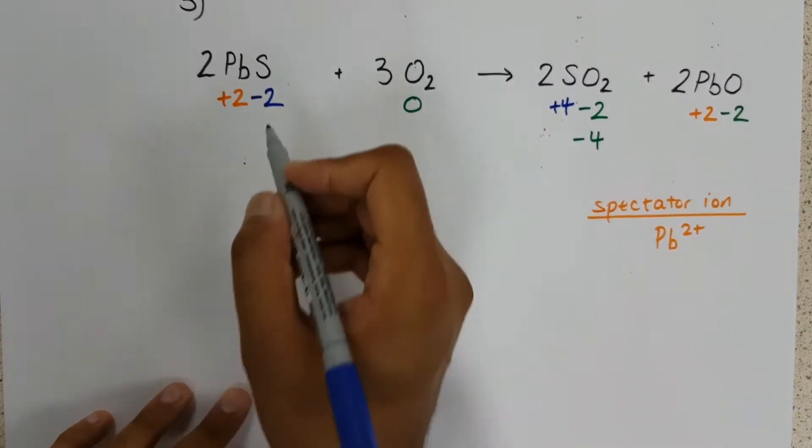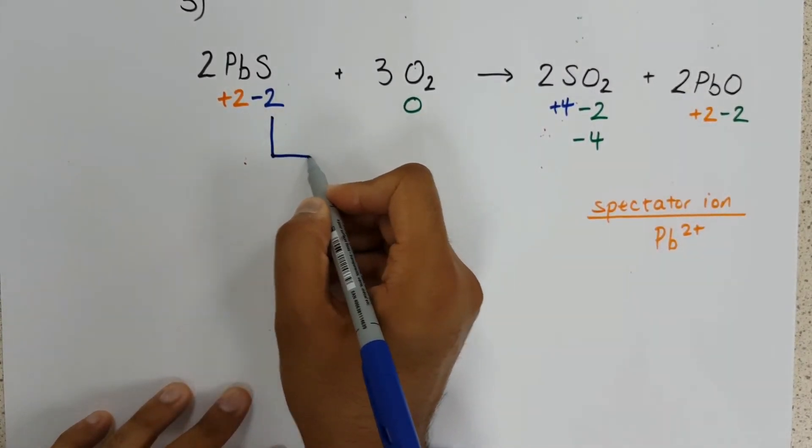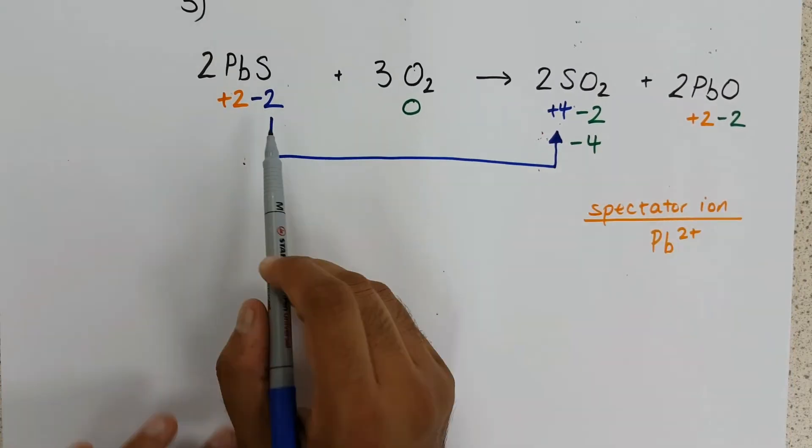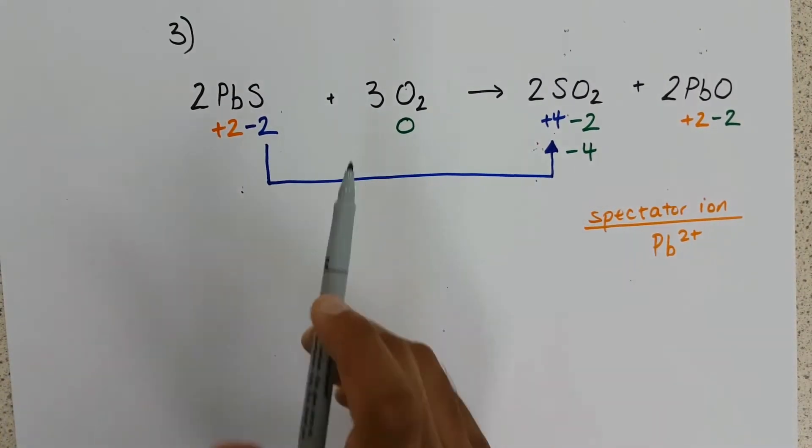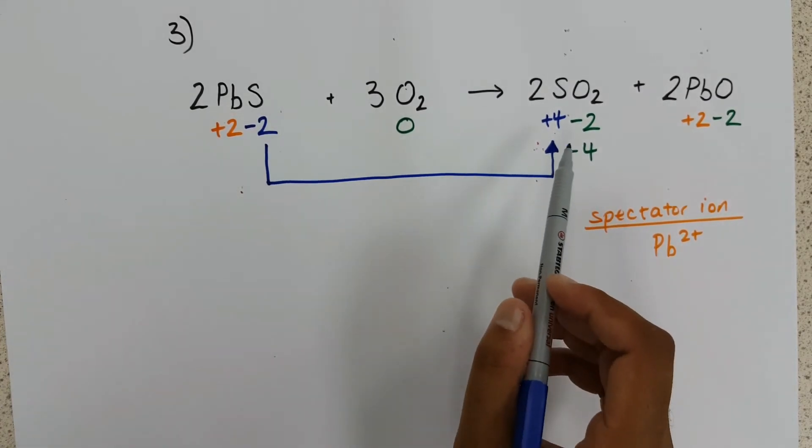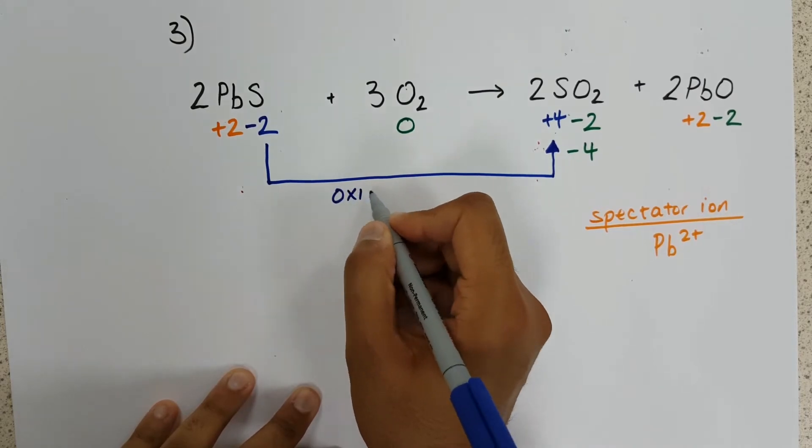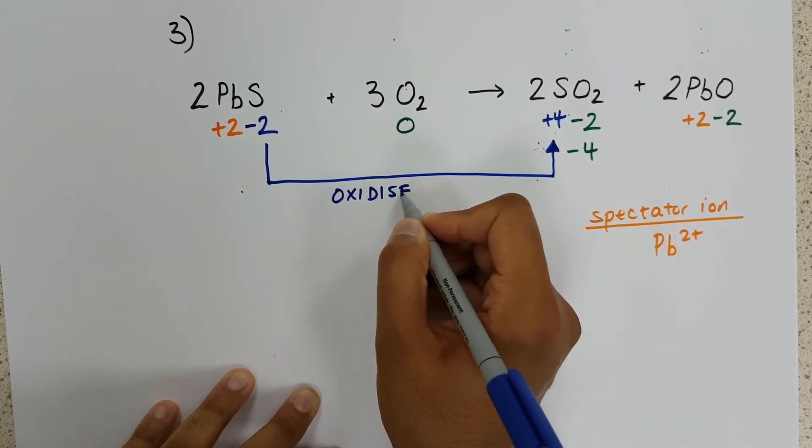Stage two. Let's draw our redox arrows. Sulfur has gone from minus two to plus four, which is a loss of electrons, so oxidation, or it has been oxidised.